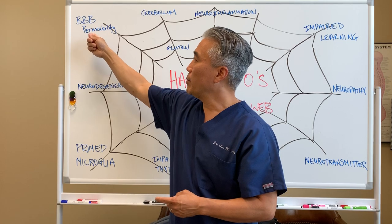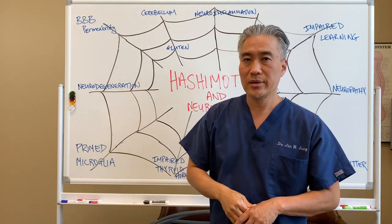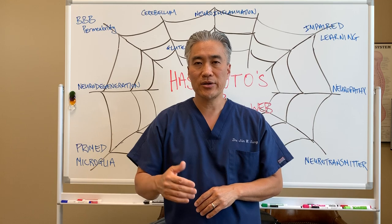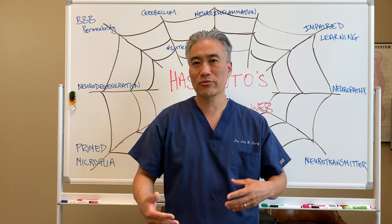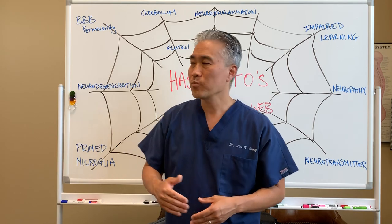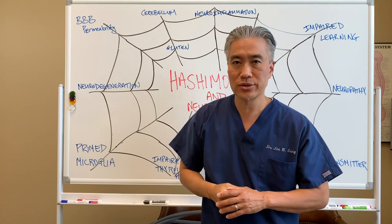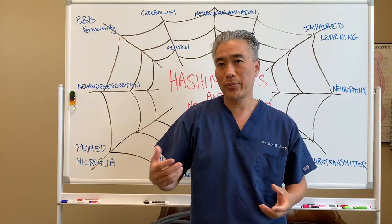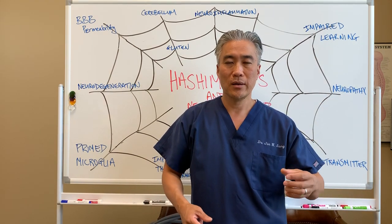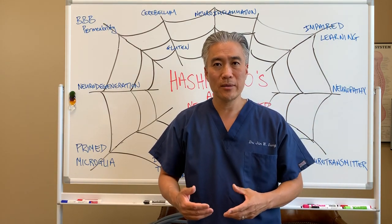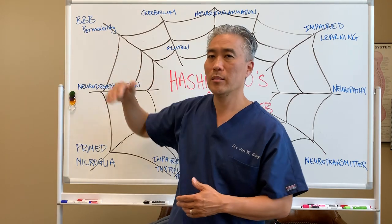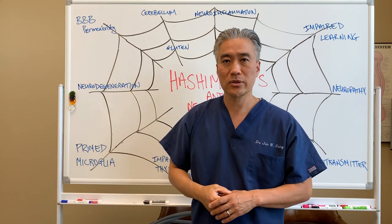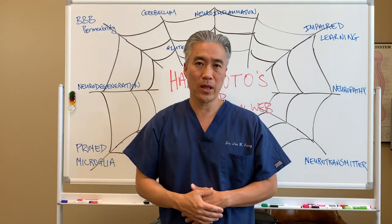Another factor is blood-brain barrier permeability. There is a barrier between the rest of the body and the brain, there to protect the brain from toxins, microbes, and other pathogens. However, this blood-brain barrier can be breached as a result of neuroinflammation, foods, pesticides, herbicides, or even plastics like BPA — all of which can damage the blood-brain barrier. Another thing that can damage it is a concussion or head trauma.